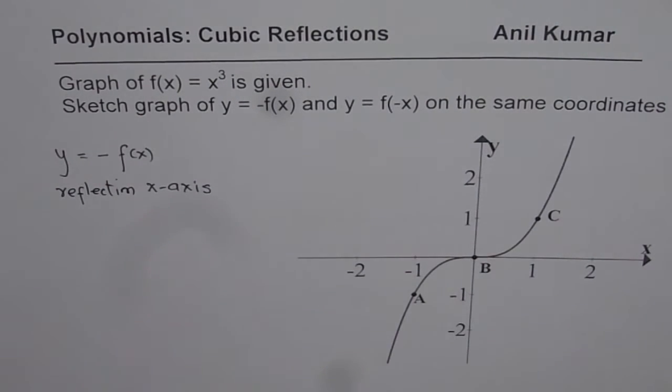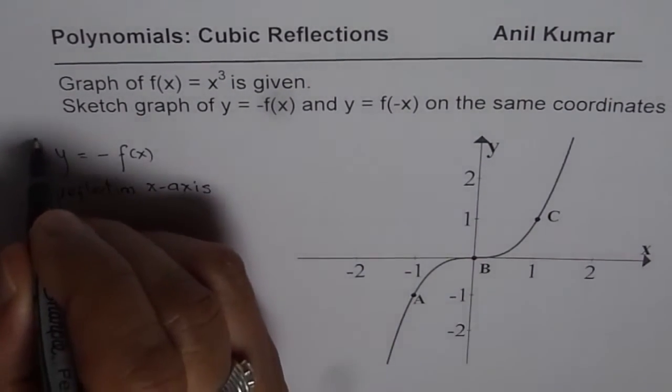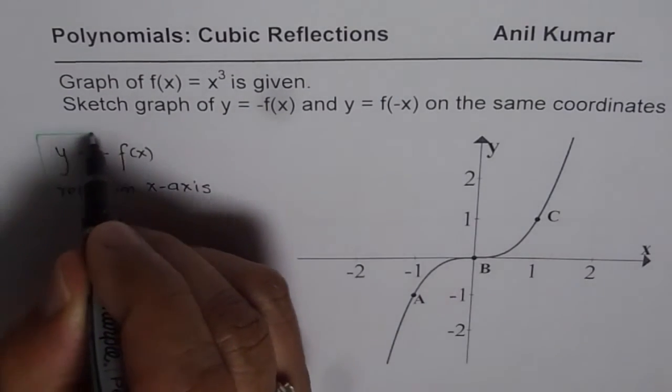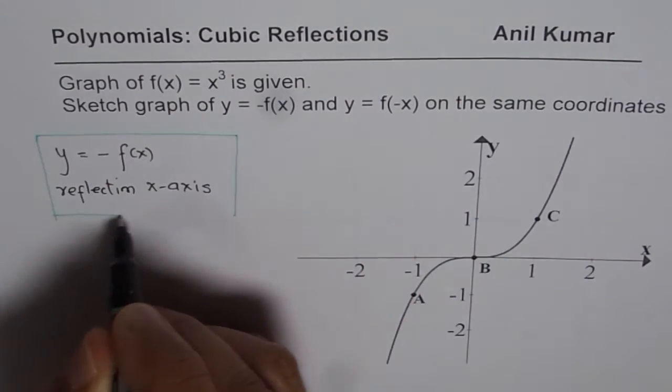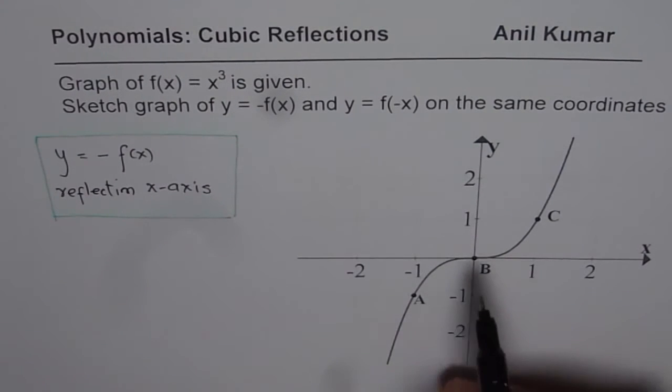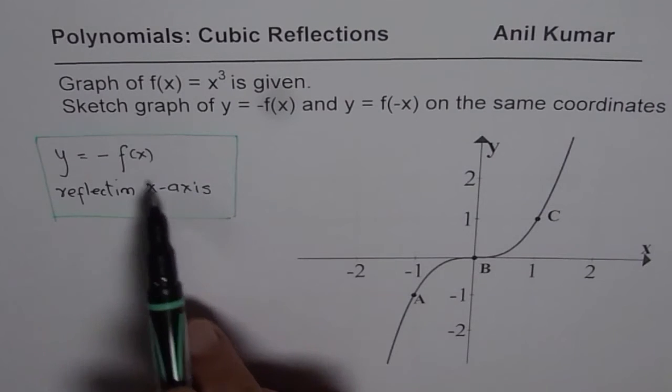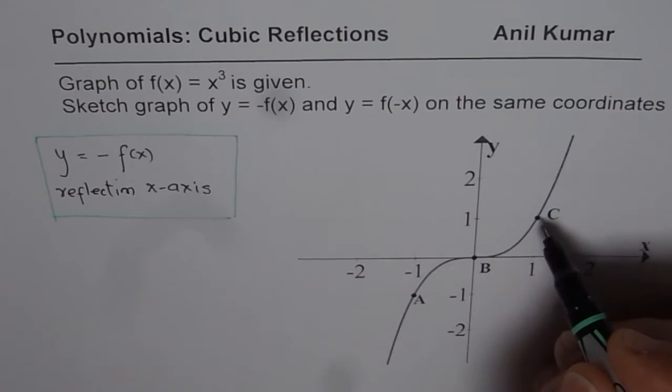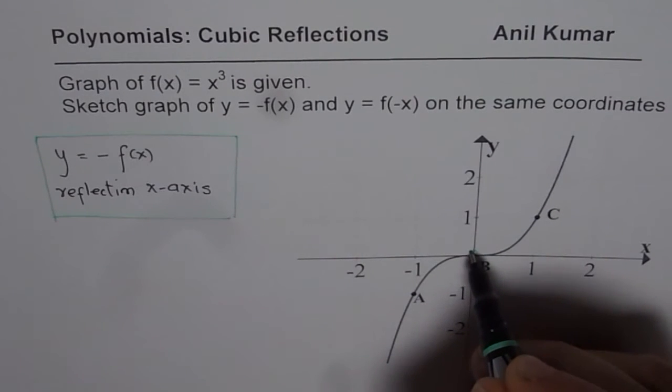So I will use a very light color to do this sketching first. Since we are doing these graphs on the same coordinates, it should not mess up, right? So reflection on x-axis, that means the origin remains at the origin.